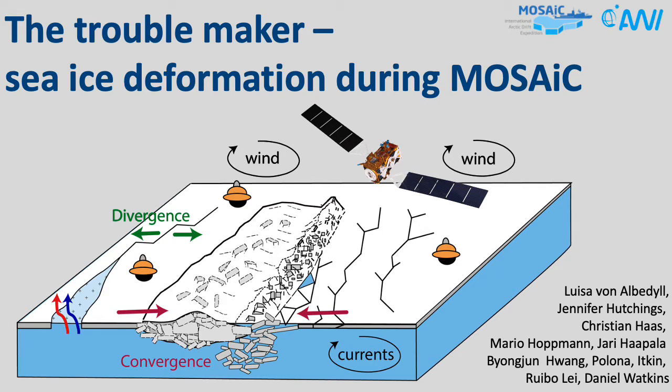You wonder how this presentation got its name? Those of you who participated in MOSAiC probably remembered the various times when the opening of a lead or the formation of a pressure ridge forced us to relocate a part of the camp. Those events did not only cause trouble for logistics but also had a strong impact on the ocean, atmosphere, or biological processes that we were capturing by our measurements.